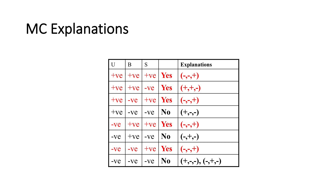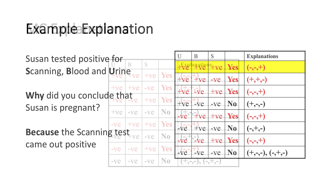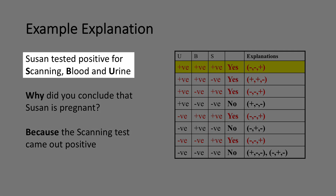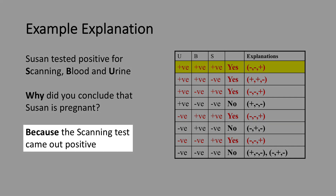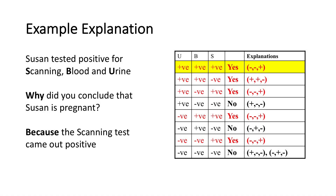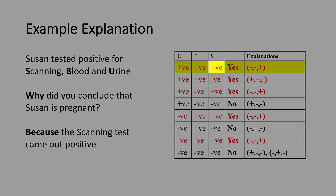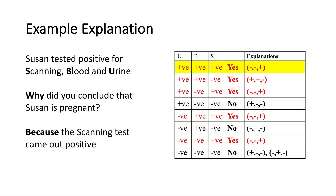Let me illustrate with a concrete example. The pregnancy classifier has only three binary features, so there are eight possible instances. Consider a patient, Susan, who tested positive for all three: scanning, blood, and urine. The classifier says pregnant. You ask why. Using the MC explanation, the answer is: because the scanning test came out positive. That means the other two tests could have been negative and the classifier would still classify Susan as pregnant — out of those three positive results, only the scanning test is the reason for the decision.